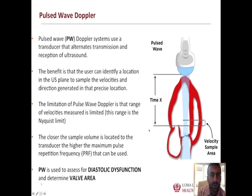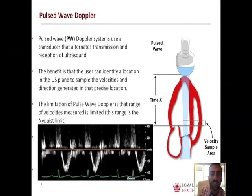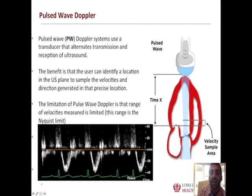Pulse wave Doppler is used for the evaluation of diastolic function by looking at a specific area of mitral inflow patterns, though those are more advanced topics. The pulse wave signal looks much more crisp simply because we're identifying an exact location where the velocity should be accessed.